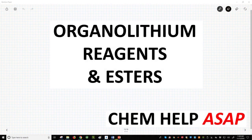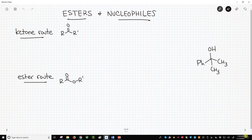Good day from Chem Help ASAP. Let's see the potential use of reacting nucleophiles with acid derivatives. Let's say we want to make this molecule on the far right. It's a tertiary alcohol that has two methyl groups and a phenyl on the alcohol carbon.